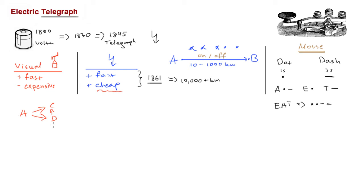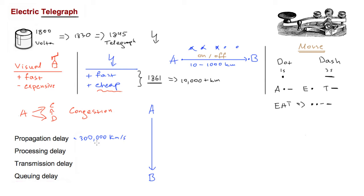The popularity of the electric telegraph created a new problem we haven't seen before: network congestion. Let's take a closer look. Every message system has a number of delays. In our case, we want to transfer a message from A to B over a copper cable. Because these are electric signals, the propagation delay, or the speed with which they travel, is 300,000 kilometers per second - very fast.